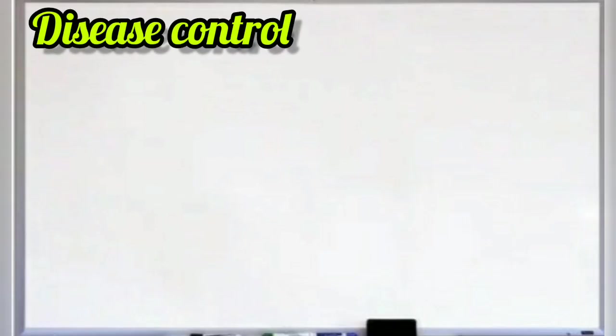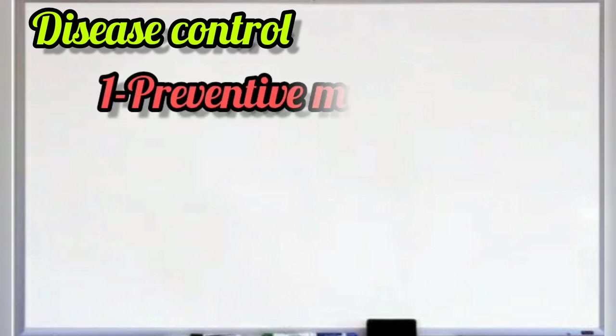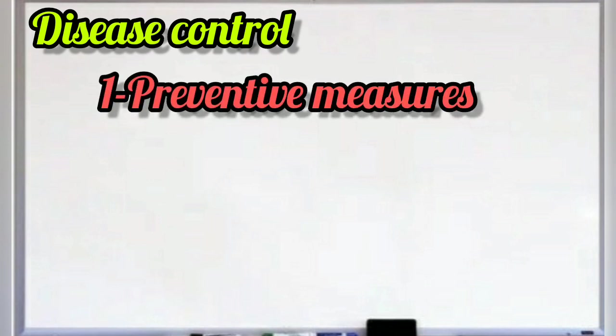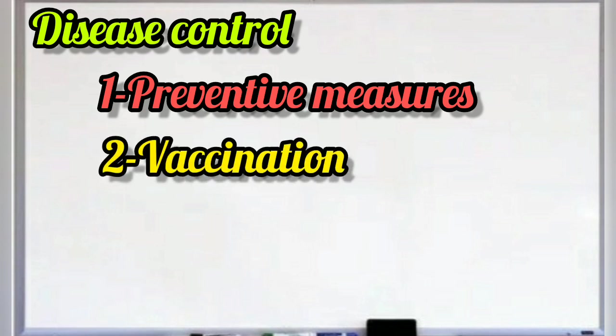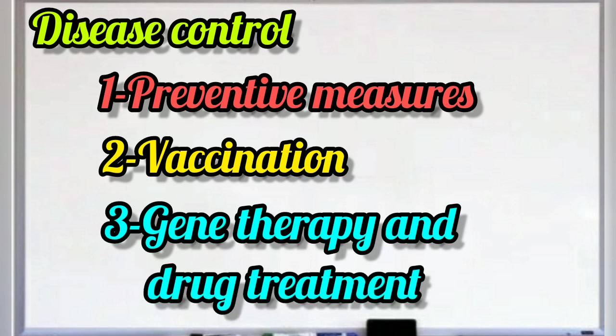Disease Control. There are 3 ways for controlling disease: 1. Preventive measures, 2. Vaccination, 3. Gene therapy and drug treatment.